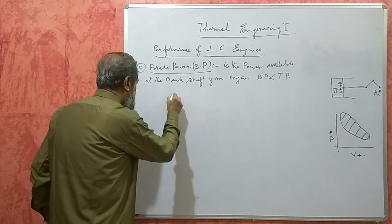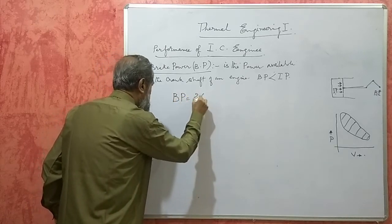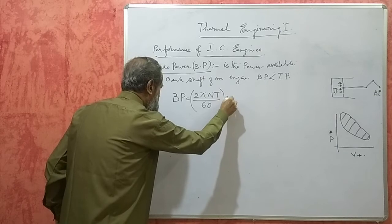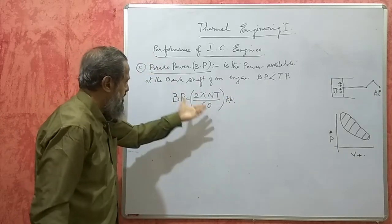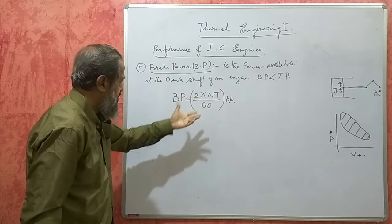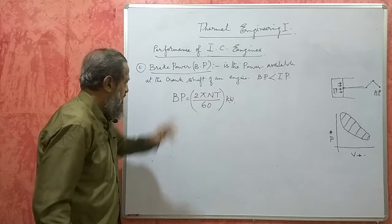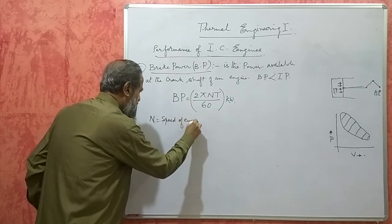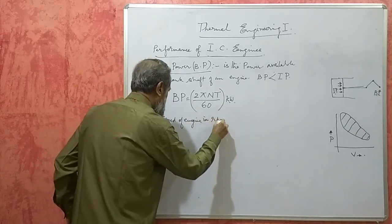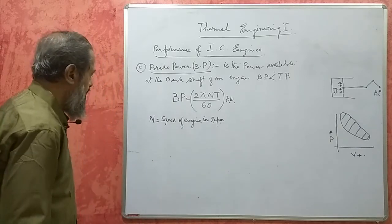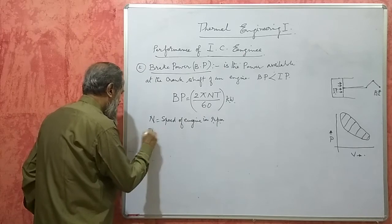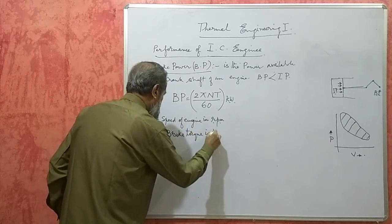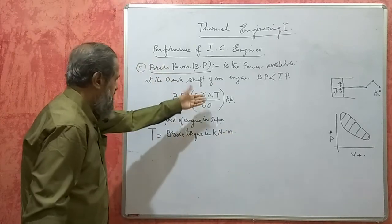BP is calculated using the formula: BP = 2πNT / 60, in kilowatts. Here, N is the speed of the engine in RPM — we need not worry about whether it is a two-stroke or four-stroke engine for this formula. T is the brake torque in kilonewton meters. This is sometimes directly given; if so, substitute it directly.